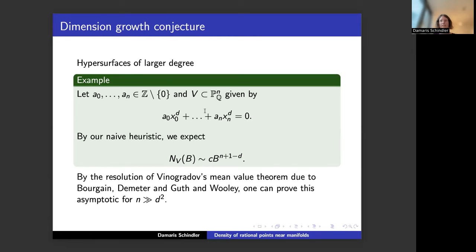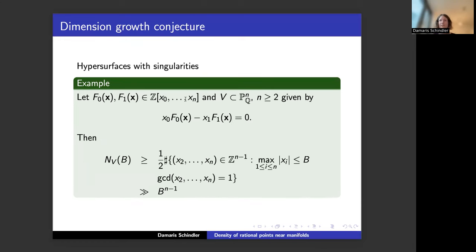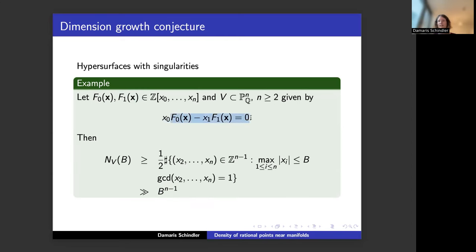Despite higher-degree varieties appearing to have fewer points, this is conditional on the variety being nice enough. Without smoothness assumptions, worse things happen. For example, consider the hypersurface x_0·f_0 − x_1·f_1 = 0: setting x_0 = x_1 = 0 gives a high-dimensional rational subspace, producing B^{n−2} points regardless of degree. So a singular or degenerate variety can contain many rational points even at high degree.